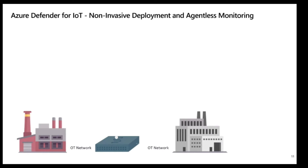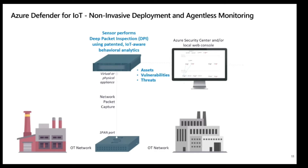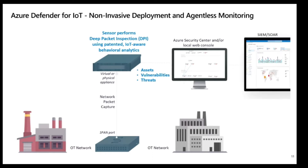Azure Defender for IoT is a non-invasive, agentless monitoring platform. Passive monitoring allows for zero impact on the network with frameworks in place for any industrial protocol. Once the sensor monitors the network, it maps out the network assets, identifies vulnerabilities, and continuously monitors for threats. Azure Defender for IoT is a scalable solution allowing for monitoring in multiple locations, enabling management both on premises and in the cloud as the system grows.